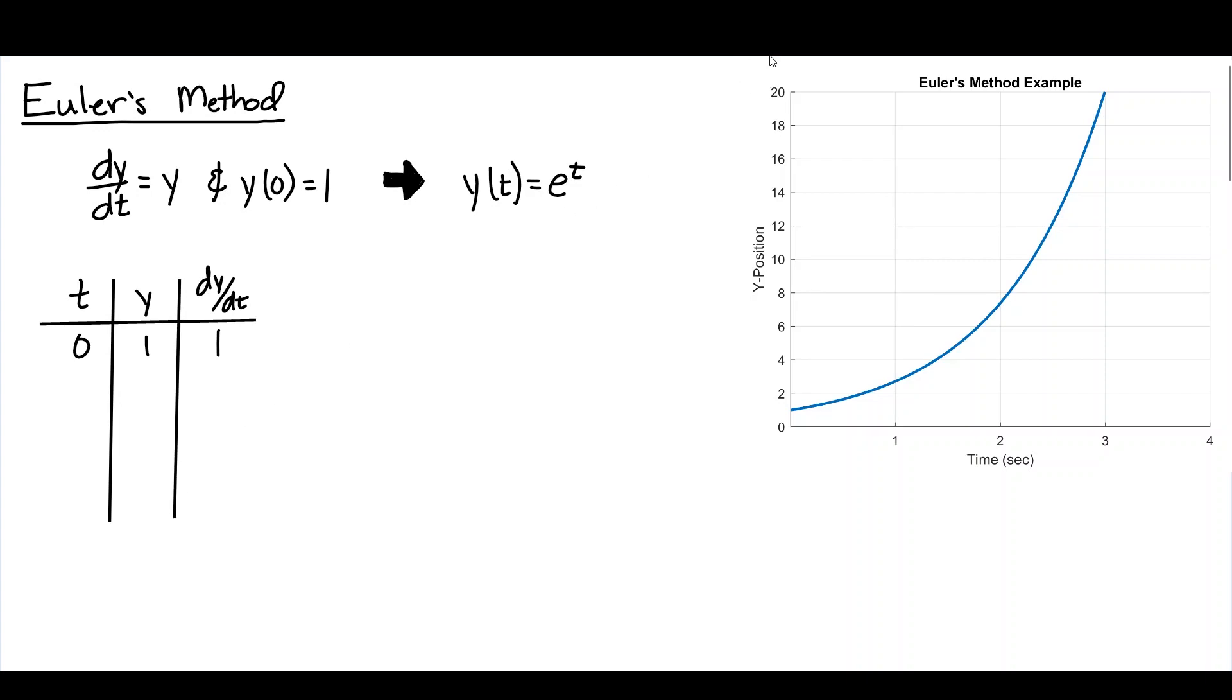So to start, that says that at this point here, at time equal to 0 and at y equal to 1, there is a slope of 1. So if I were to draw a line with a slope of 1 here, it would look something like this. Now I want to take a step in time projecting forward and repeat this process.